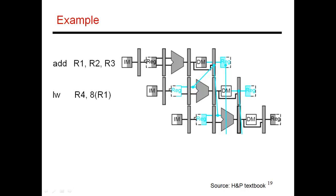Let me go through a few more examples. Here's an ADD that does R2 plus R3, producing the result into R1, and the next instruction tries to read R1. I want to figure out if I have to introduce stall cycles or if they can issue back to back. If issued back to back, the point of production — when I know the value going into R1 — is after the ALU computes R2 plus R3, which is the third stage.